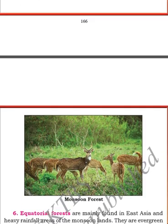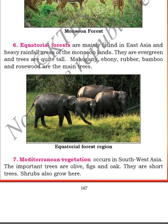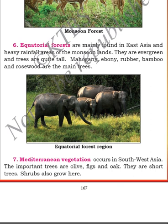Next comes the equatorial forests, which are mainly found in East Asia in areas with heavy rainfall. The evergreen trees are quite tall. You can see this is a large part of the tree — the equatorial forests have very tall, dense vegetation.